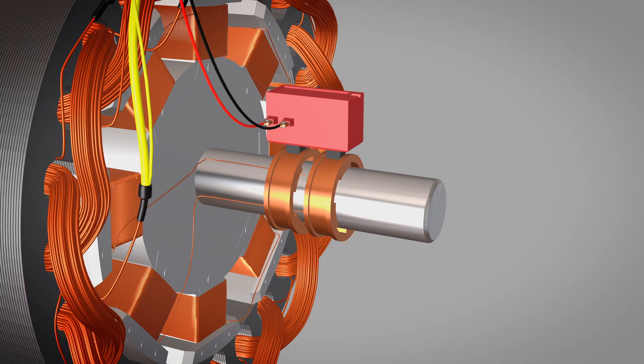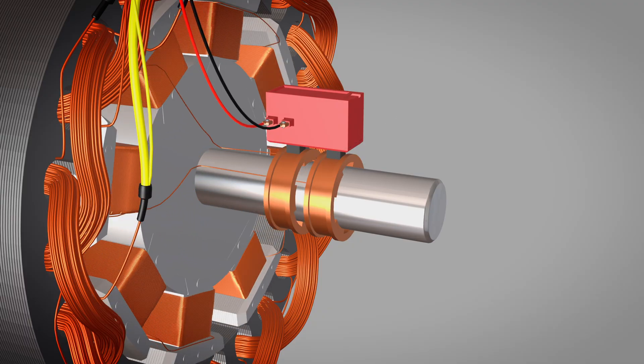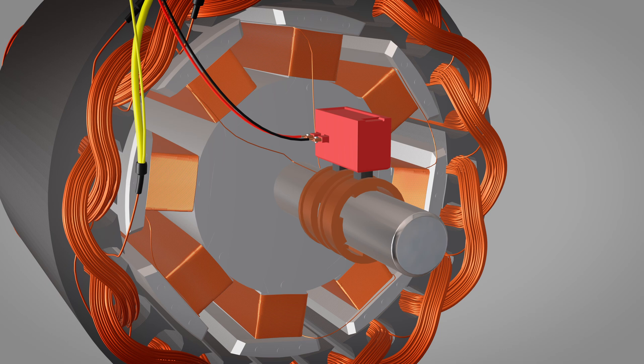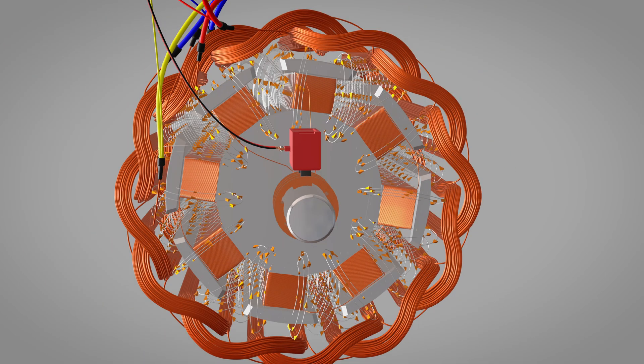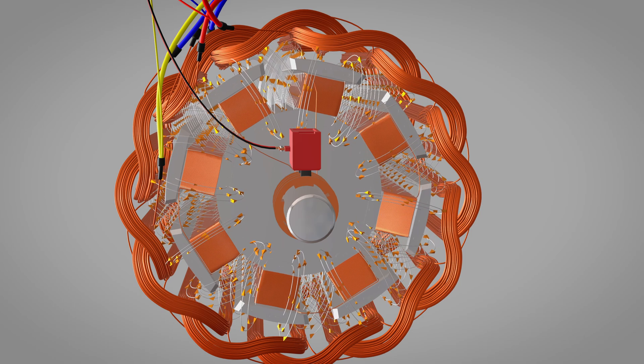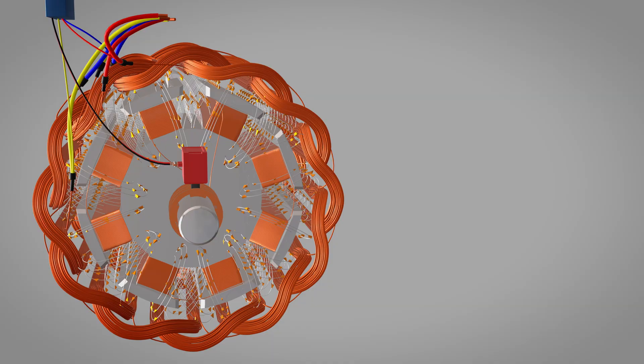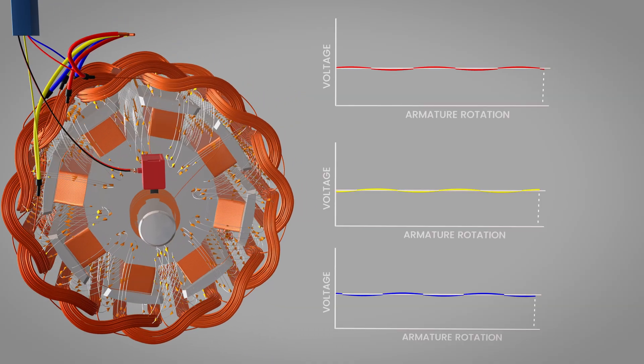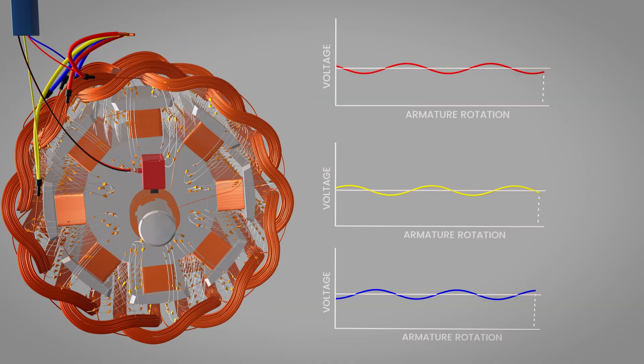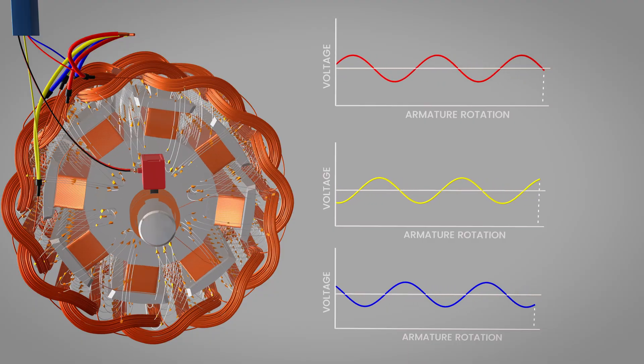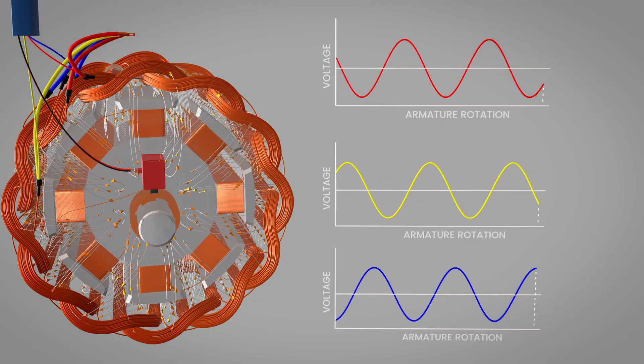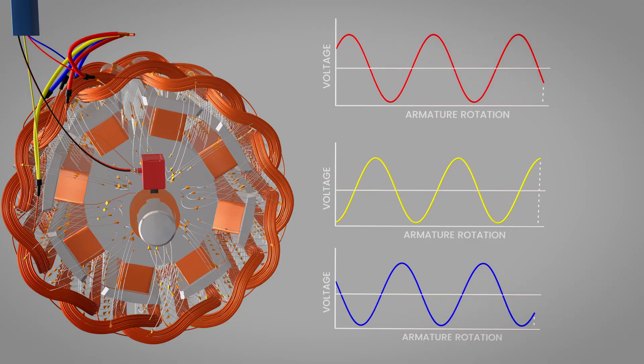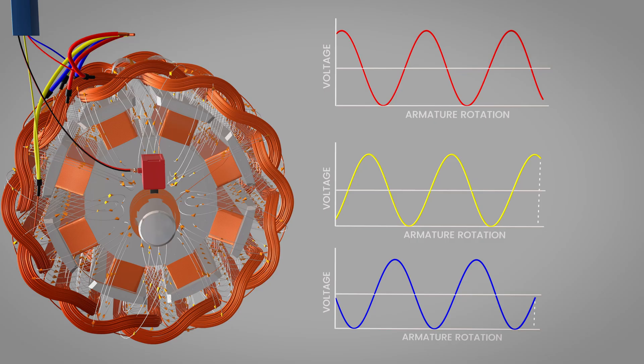Although the system is fully autonomous once running, a unique startup challenge arises. With no external source, the alternator must rely on residual magnetism, a tiny remnant magnetic field in the iron cores of the field windings. When the rotor begins turning, this weak residual field cuts through the stator windings, inducing a small initial voltage. That voltage, though minimal, feeds back through the AVR to the field windings, thereby amplifying the magnetic field. As the field strengthens, the generated voltage increases, creating a bootstrap effect that rapidly builds to full-rated voltage.